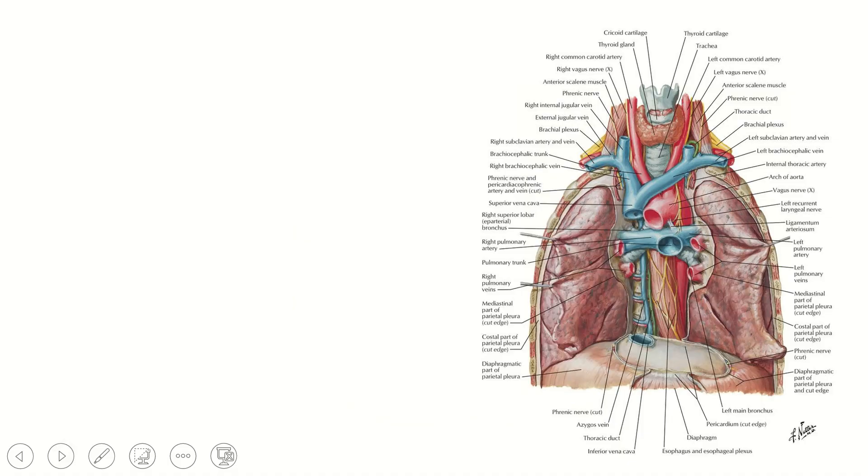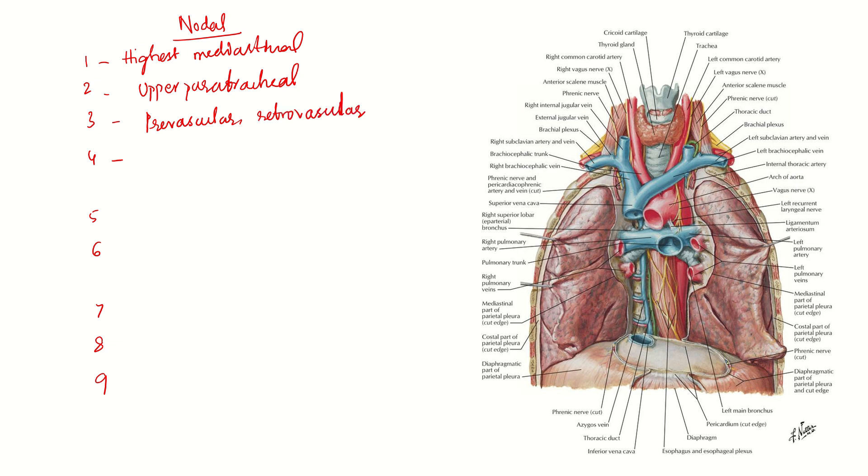Next coming to N staging. Nodal staging is a tricky one. It is from 1, 2, 3, 4, 5, 6, 7, 8 and 9. Station 1 is highest mediastinal, 2 is upper paratracheal. Don't worry, I will show you all these stations in the image. Stage 3 is prevascular and retrovascular, 4 is lower paratracheal. Highest mediastinal starts from the thoracic inlet, this is station 1. This is upper paratracheal. This is prevascular, as you can see the great vessels - arch of aorta, SVC and pulmonary artery. This comes under 3, prevascular and retrovascular. Stage 4 is lower paratracheal, behind this retrovascular space.